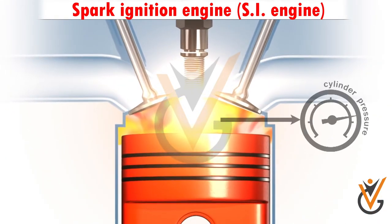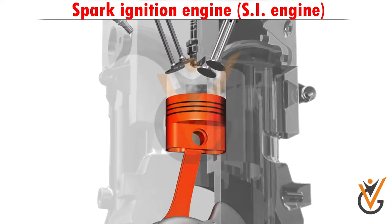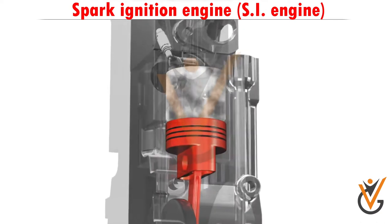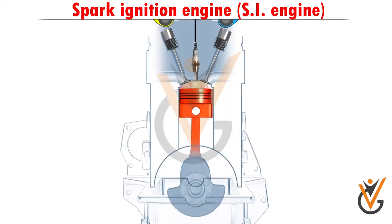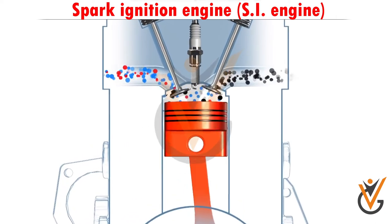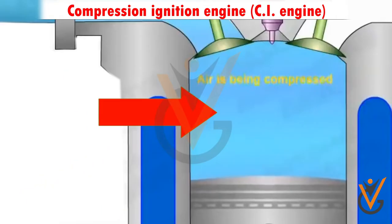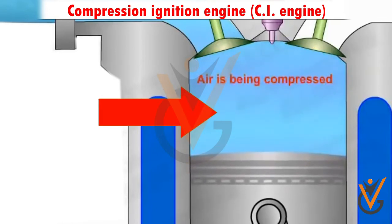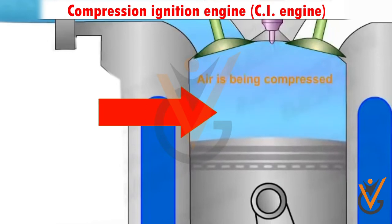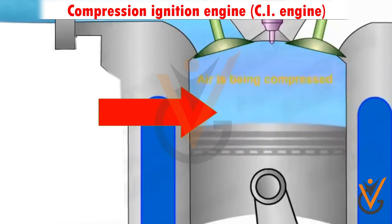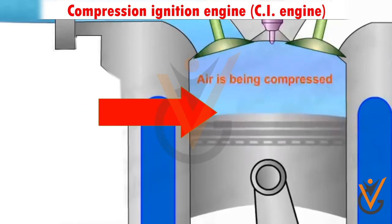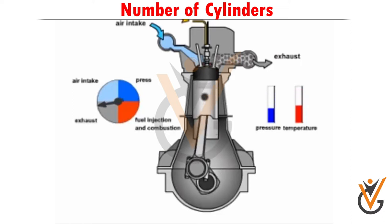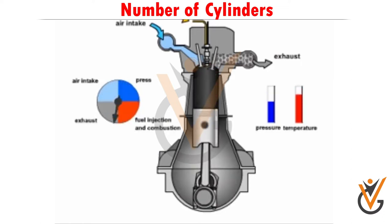On the basis of ignition, engines are classified as spark ignition engines and compression ignition engines. In a spark ignition engine, a spark plug is fitted at the engine head; it produces a spark after compression of the fuel to ignite the air-fuel mixture. Petrol engines are spark ignition engines. In a compression ignition engine, there is no spark plug; the fuel is ignited by the heat of compressed air. Diesel engines are compression ignition engines.